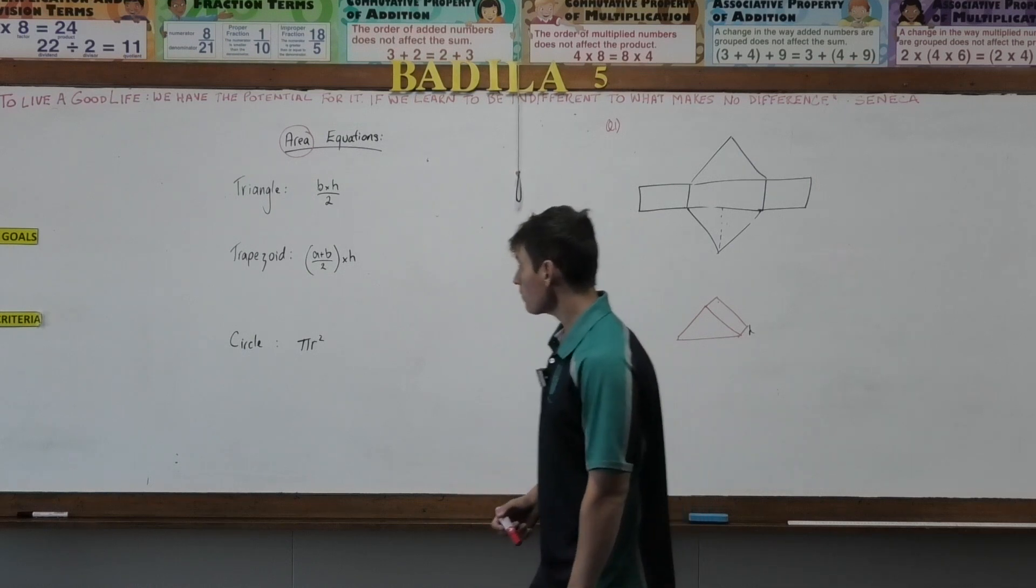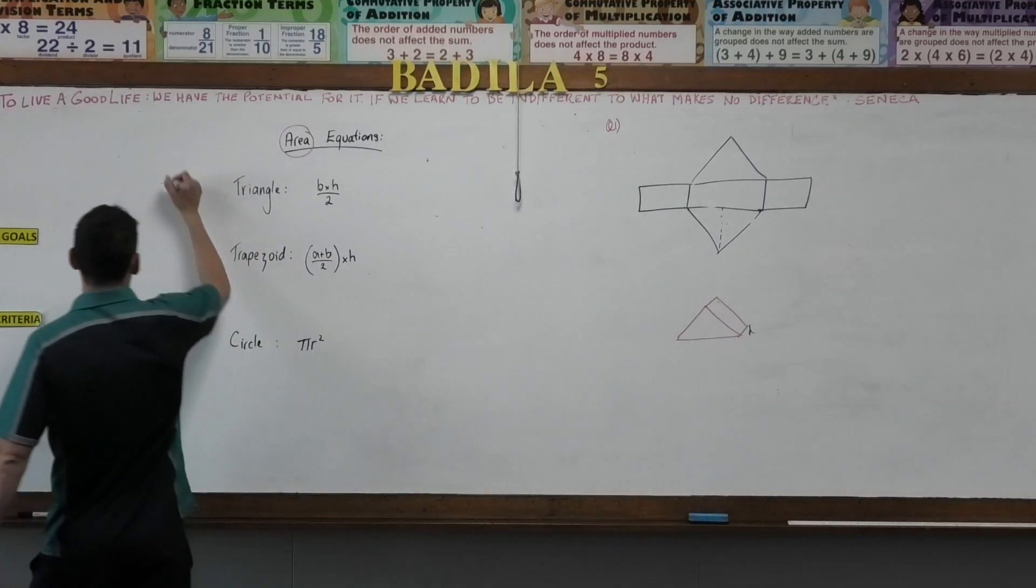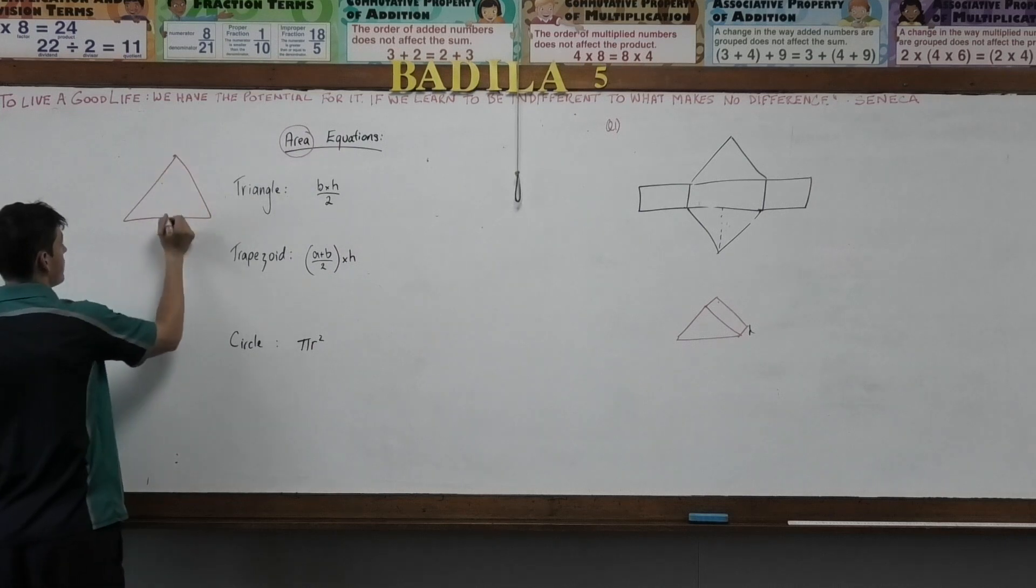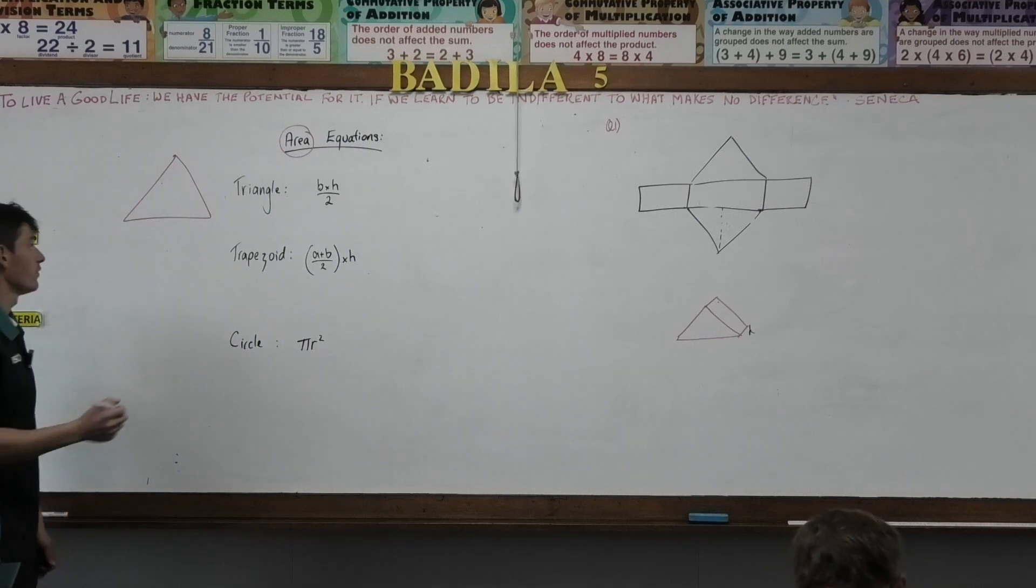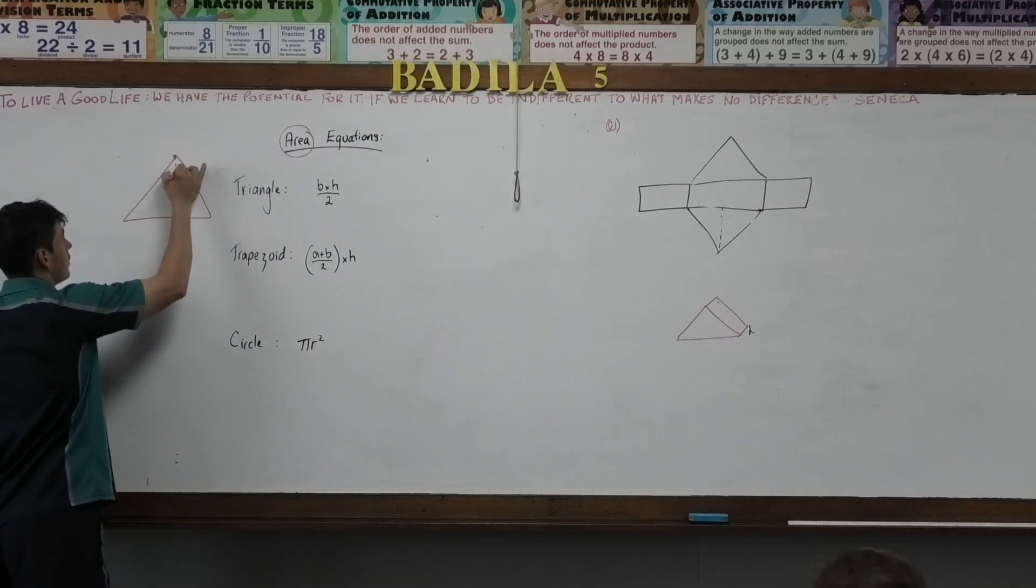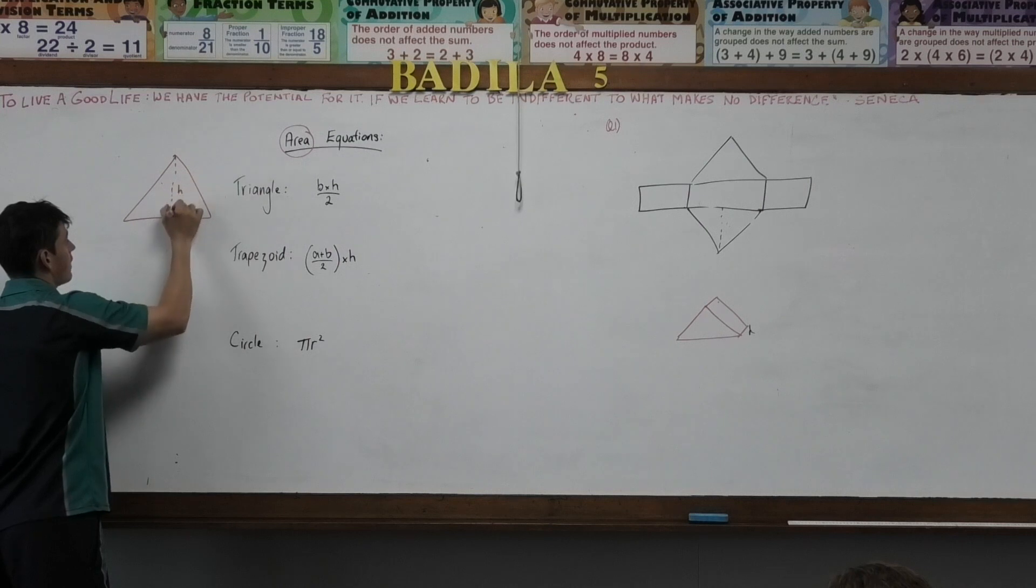So obviously I'm going to draw these shapes here, but a common misconception I'm seeing is if this is our triangle, the area is equal to half base times height, or base times height divided by 2. That is my height.